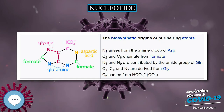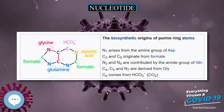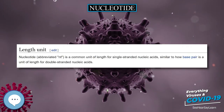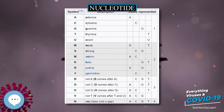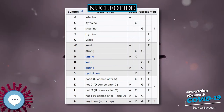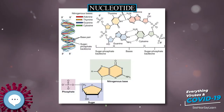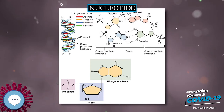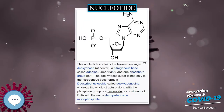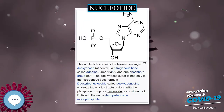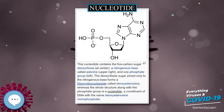Nucleotides also play a central role in metabolism at a fundamental cellular level. They carry packets of chemical energy in the form of nucleoside triphosphates — adenosine triphosphate (ATP), guanosine triphosphate (GTP), cytidine triphosphate (CTP), and uridine triphosphate (UTP) — throughout the cell to the many cellular functions that demand energy.